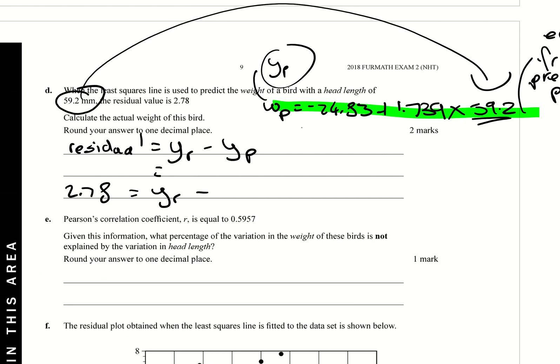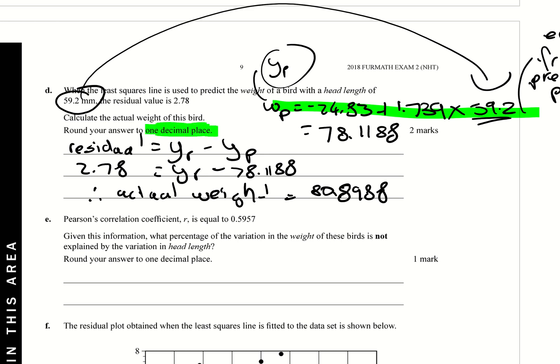You calculate that and you get a value that equals 78.1188. So it's 2.78 equals YR minus 78.1188, and you just use, you know, you're going to move it across and you're going to basically add 2.78 to 78.1188. So therefore actual weight equals 80.8988. And key point here, one decimal place. So the answer in this case is going to be 80.9 grams.